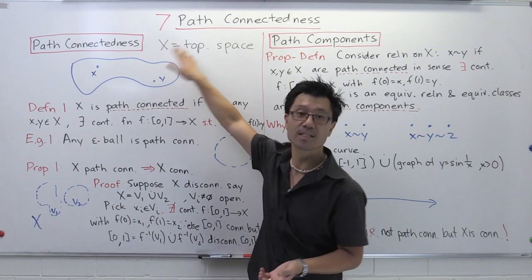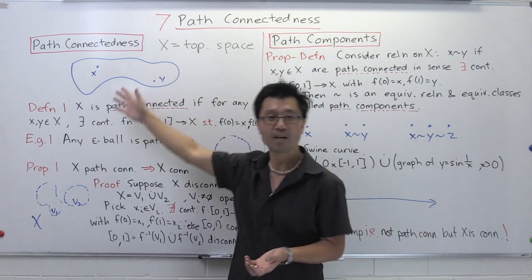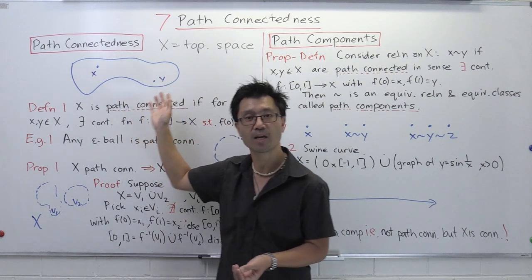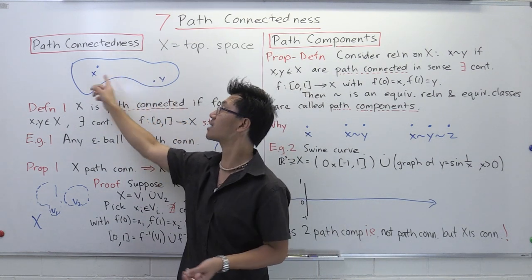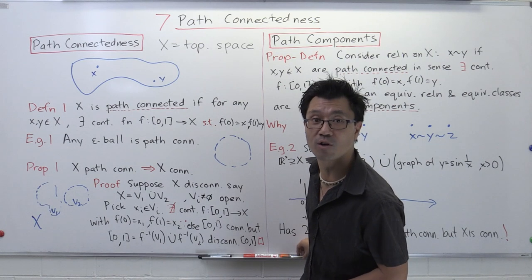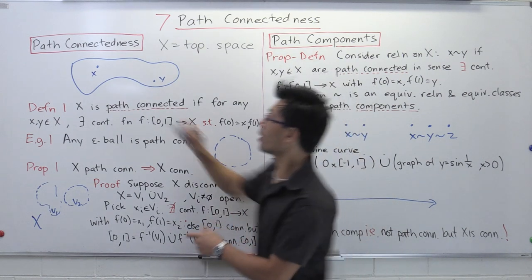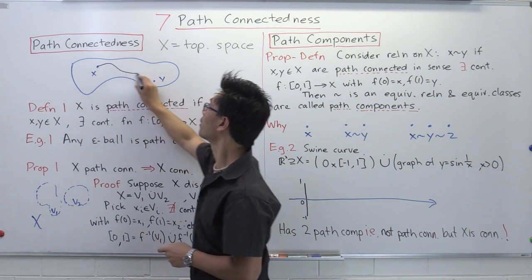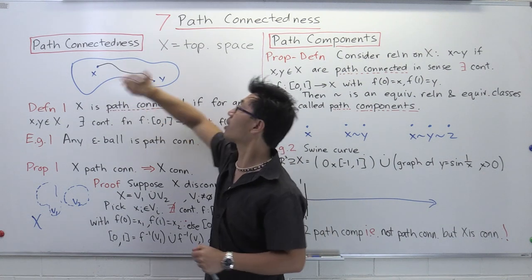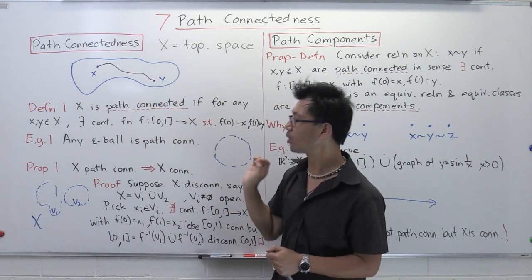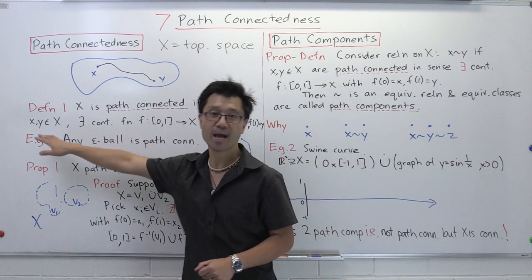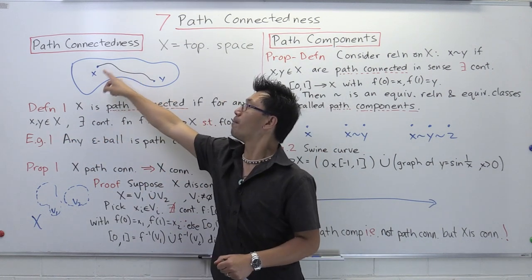Let's suppose x is a topological space, and let's motivate what this definition involves. To be connected, one way to think of it is that if you're given any two points in that space, like x and y, you can actually connect them with some sort of a path. So we want to say x is path connected if, given any two points x and y, we can make a path like this.